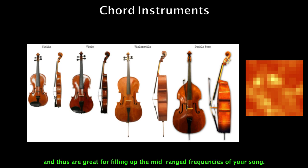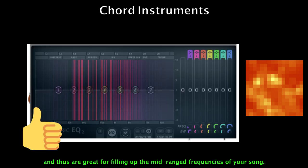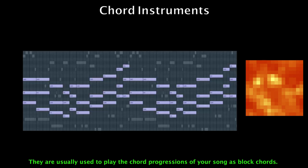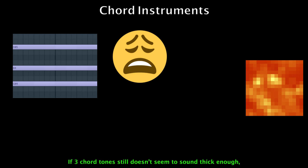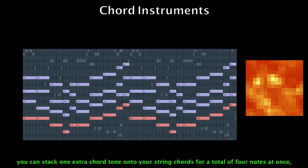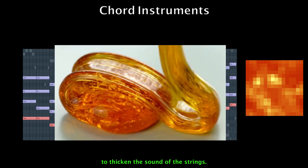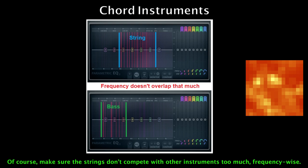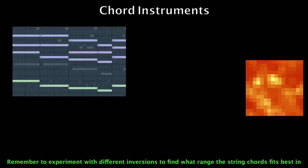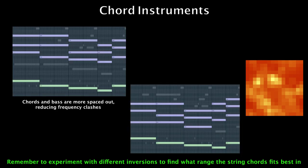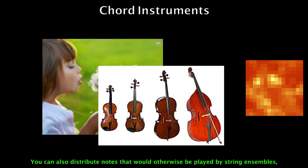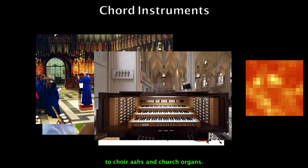String ensembles sound full, and are great for filling up the mid-range frequencies of your song. They are usually used to play the chord progressions as blocked chords. If three chord tones still don't seem thick enough, you can stack one extra chord tone onto your string chords for a total of four notes at once to thicken the sound. Make sure the strings don't compete with the other instruments too much frequency-wise. Remember to experiment with different inversions to find what range the string chords fit best between the melody and the bass. You can also distribute notes with choir sounds and church organs.